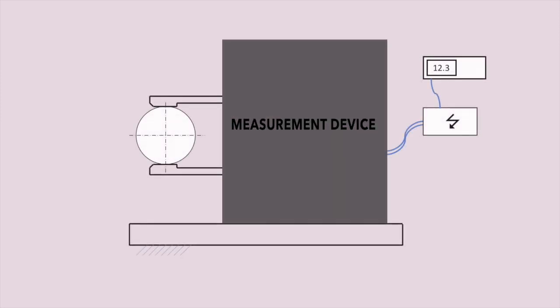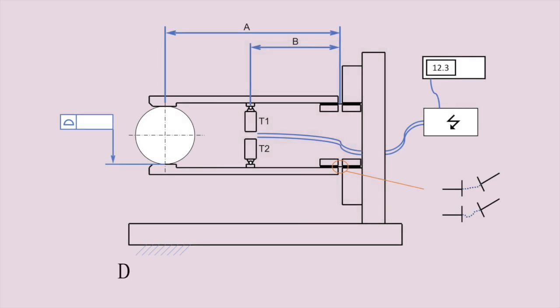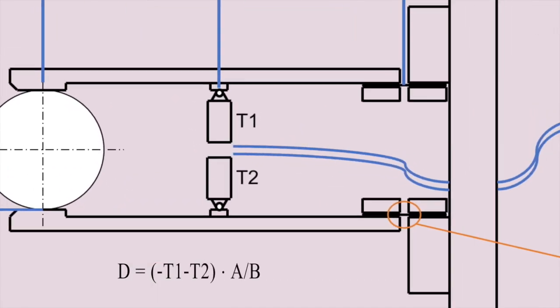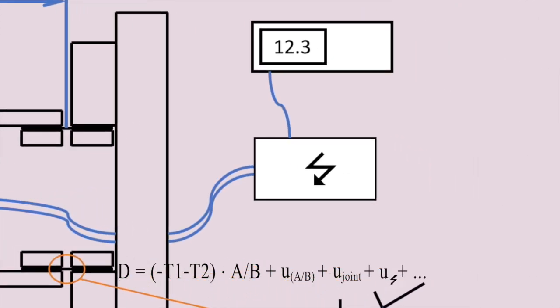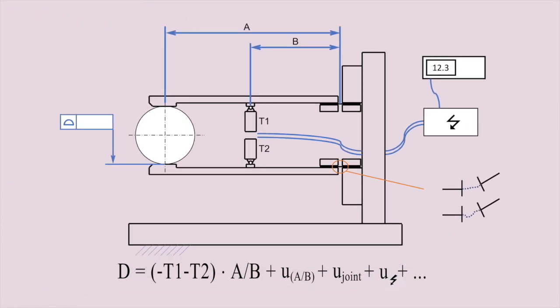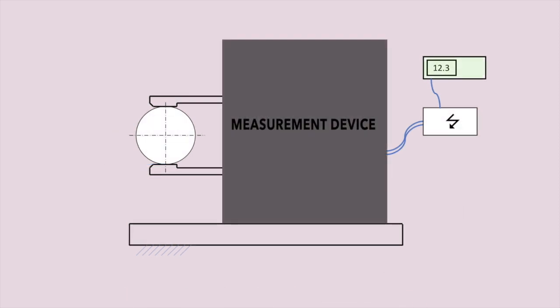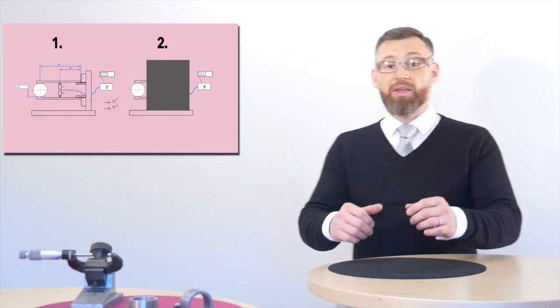There are two extreme approaches to finding the uncertainty. One I would call a bottom-up, where we would look inside the measuring device and all its relevant components, and we would build a multi-physical model of how the dimension of the measured part gets translated into the displayed measured value. The second one would be not to care at all about the guts and only observe the performance of the device at certain conditions. The proper approach is, as always, somewhere in the middle.